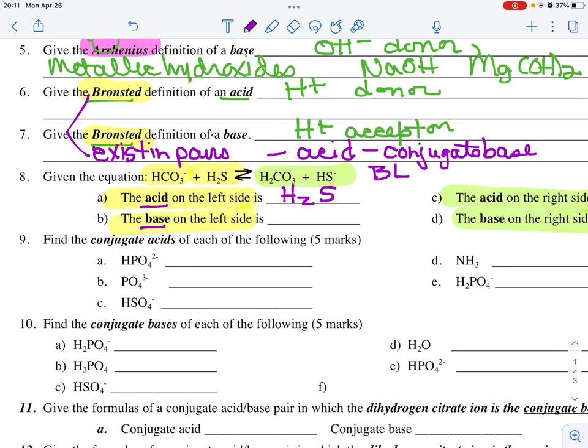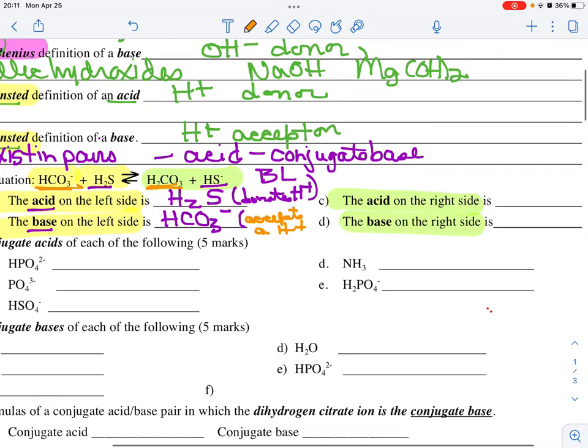H2S between here and here, you can see that it donates an H-plus. It is therefore the acid. The base is HCO3 minus. And you can see that from here to here, it accepts an H-plus.